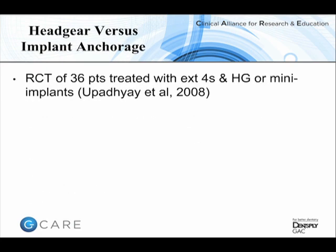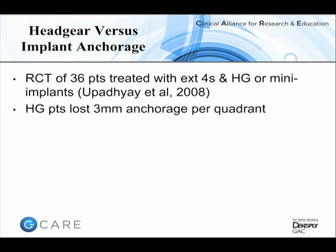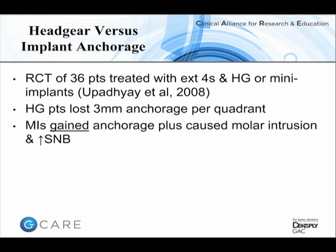The literature base for mini-implants is still relatively immature, so there aren't many randomized controlled trials available. One useful RCT published in 2008 in the American Journal of Orthodontics studied 18 patients in each group: one with conventional headgear anchorage and one with mini-implant anchorage, both with first bicuspids extracted. Notably, headgear patients lost an average of almost half of the bicuspid space, whereas the mini-implant group not only failed to lose anchorage but actually gained anchorage.